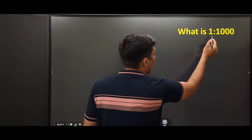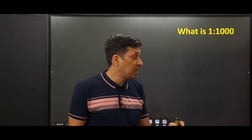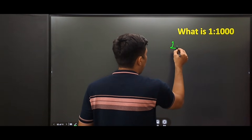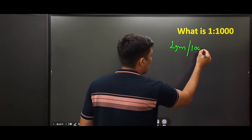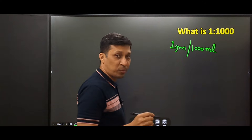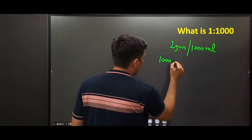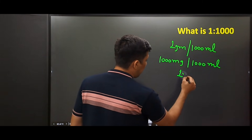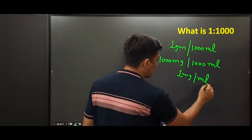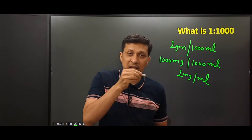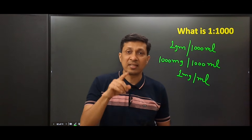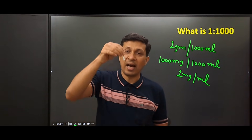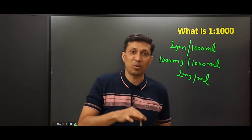So one in one thousand means one gram in one thousand ml. One gram can also be written in milligrams, which is one thousand milligrams — meaning one milligram per ml. So one in one thousand means one milligram per ml. This ampoule of adrenaline that we normally use is at one in one thousand concentration, meaning each ml contains one milligram of adrenaline. This ampoule is one ml, so the total amount of adrenaline present is one milligram.